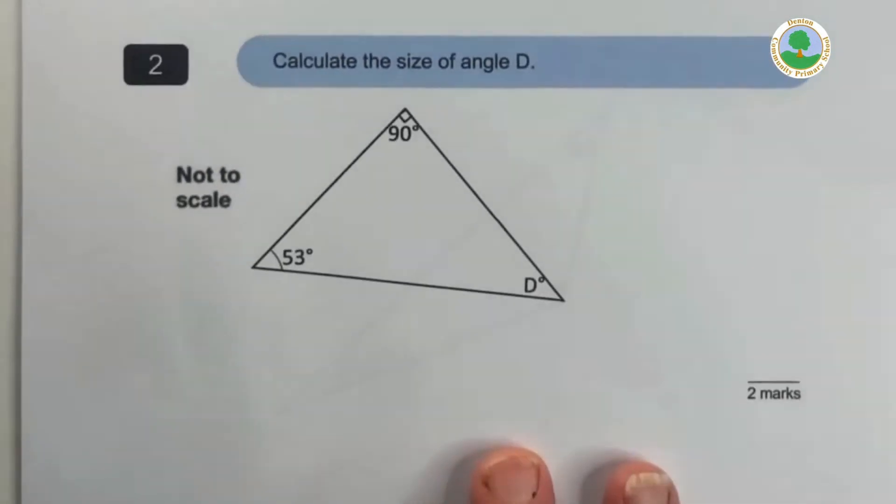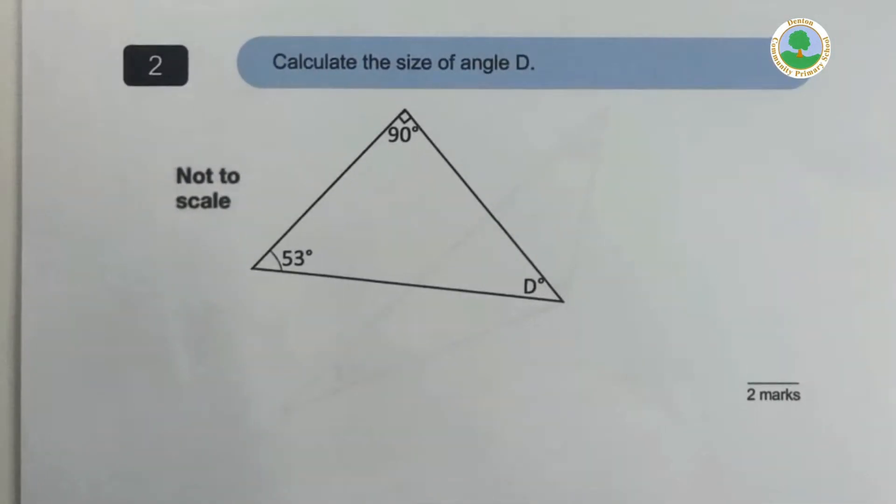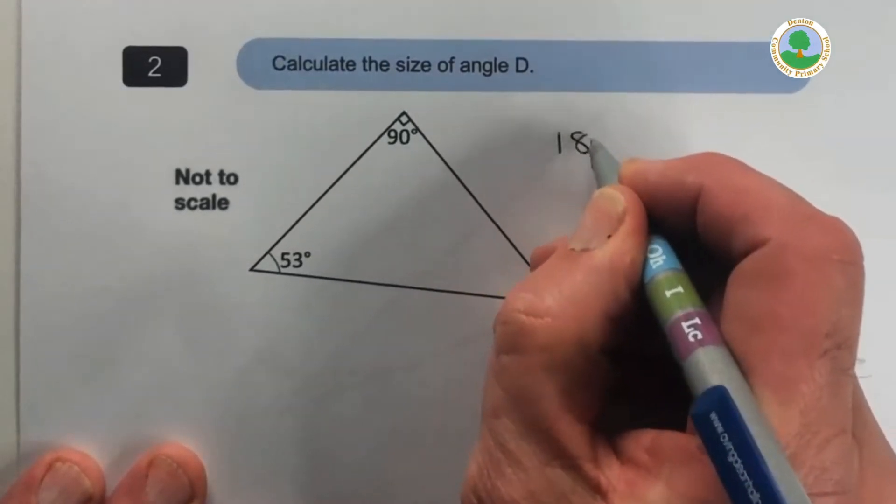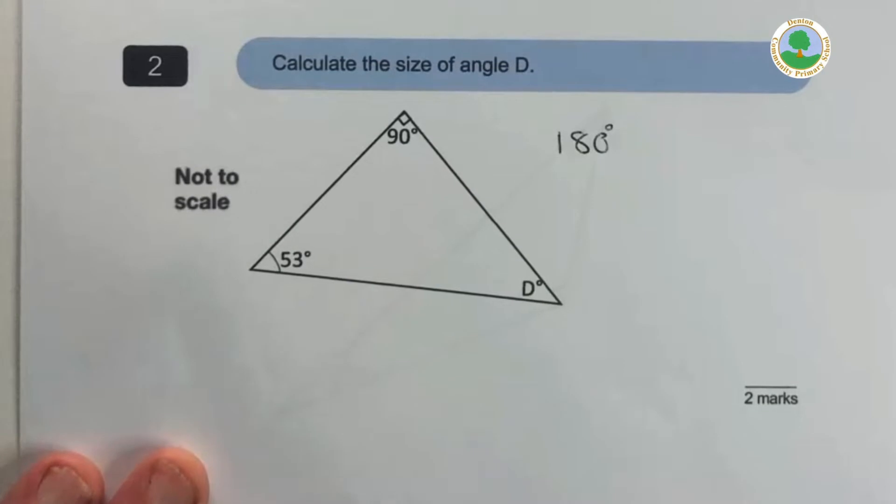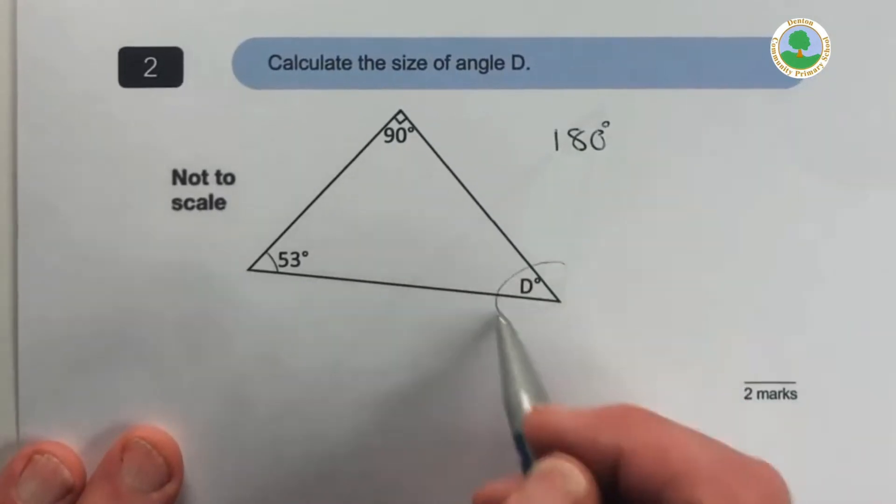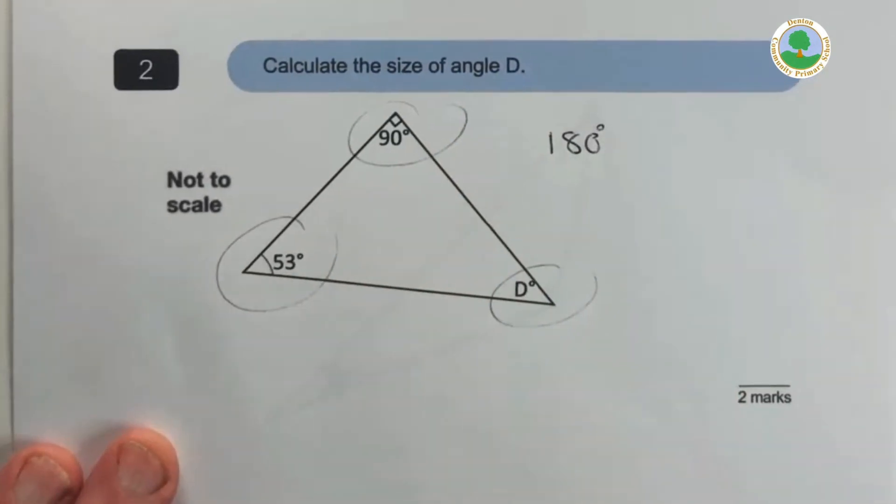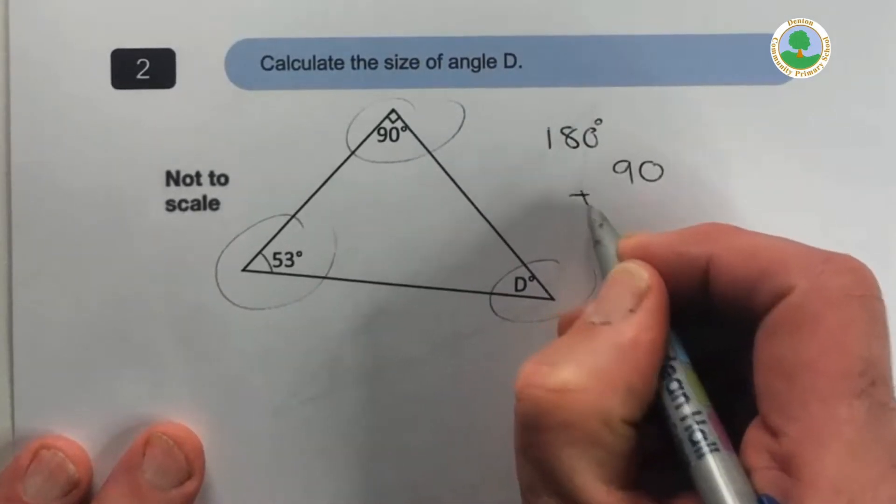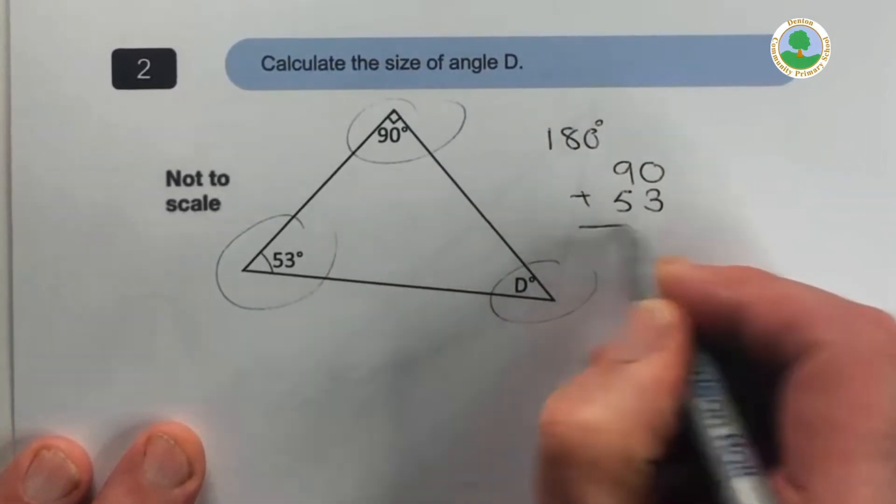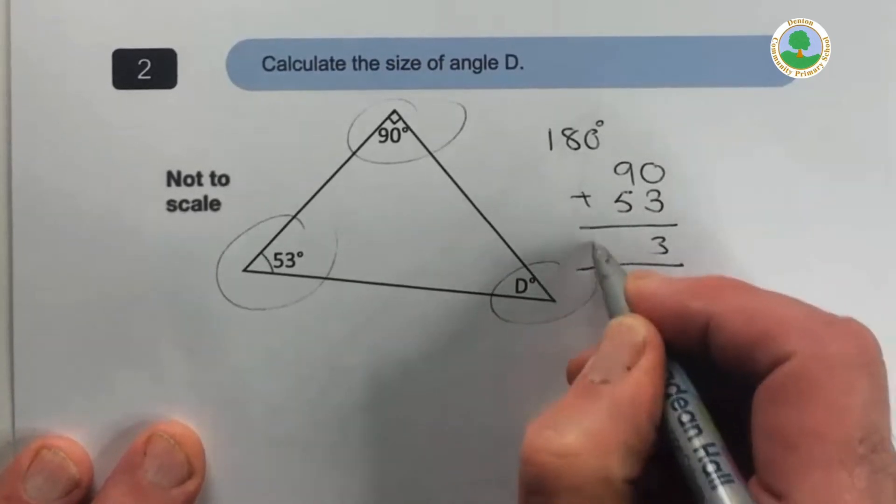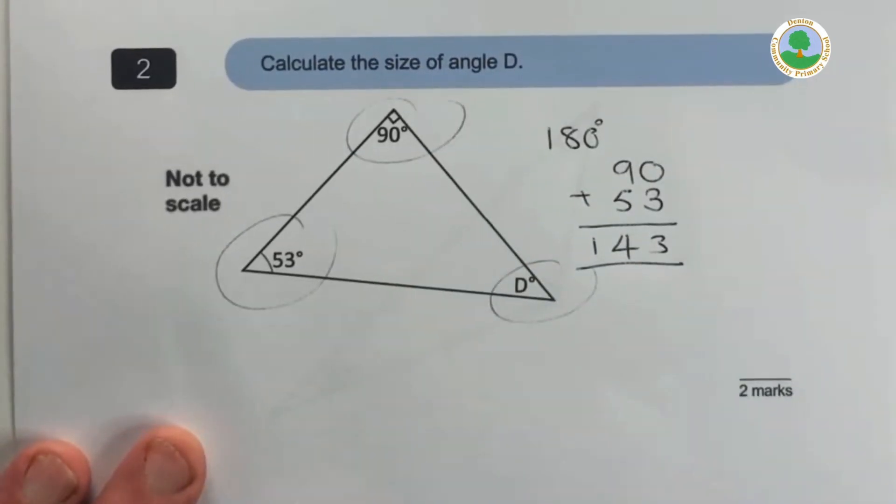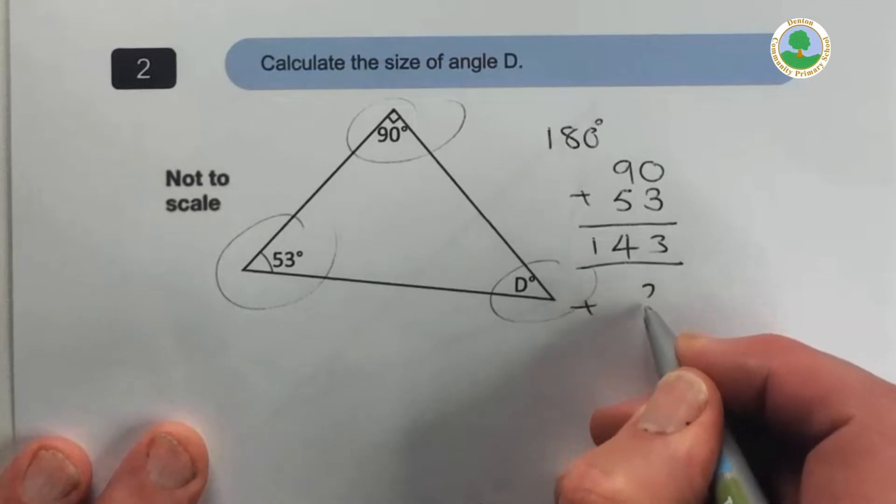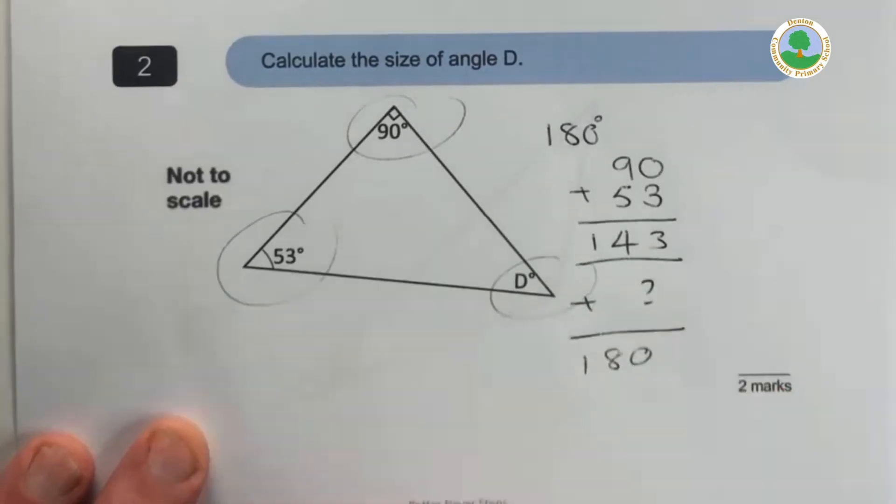On to question two. All right, here we go. Now calculate the size of angle D. Remember what we said, a triangle always has 180 degrees in it. And in this triangle, we're given two of the three angles already. So it really is very simple. It's a question of finding out the total of those.